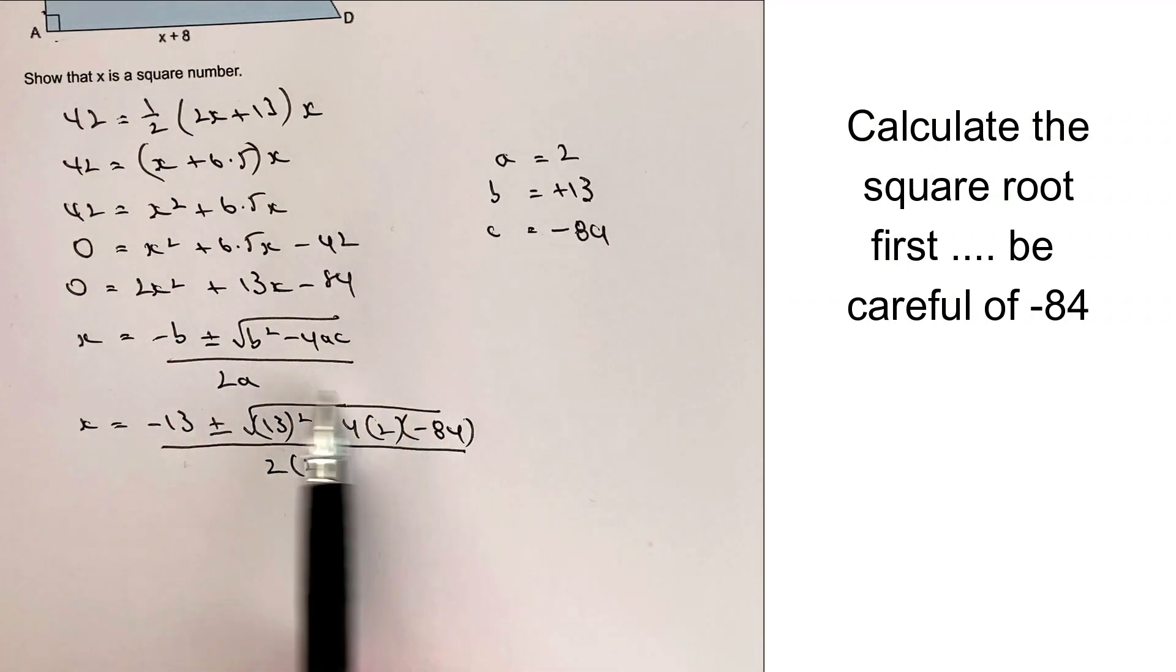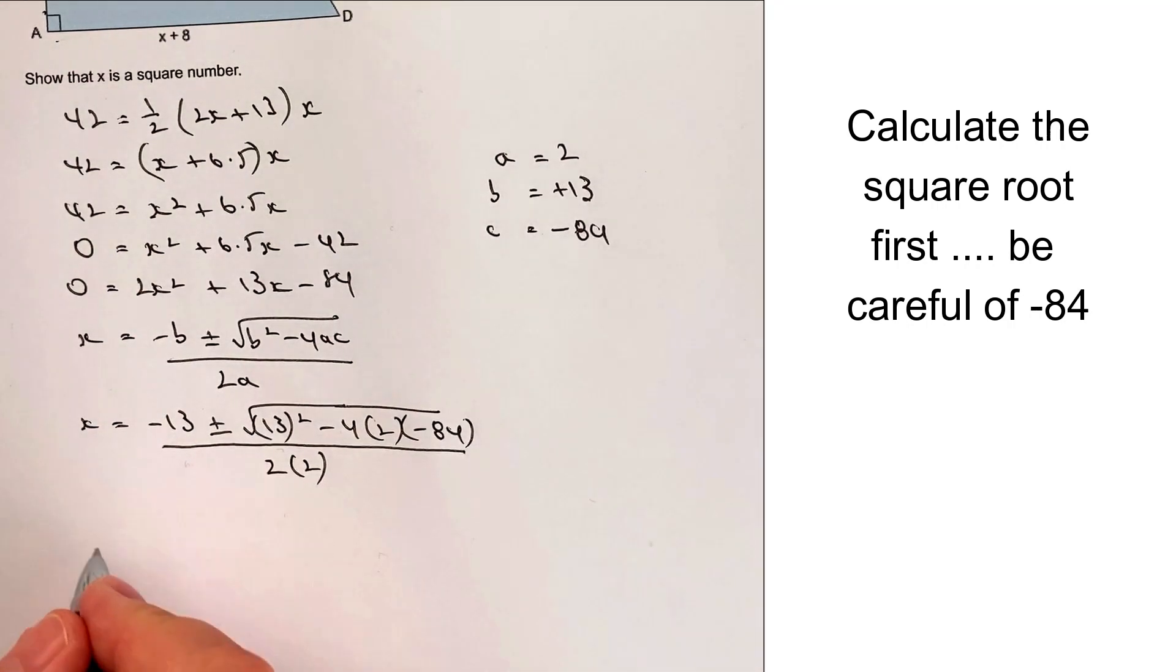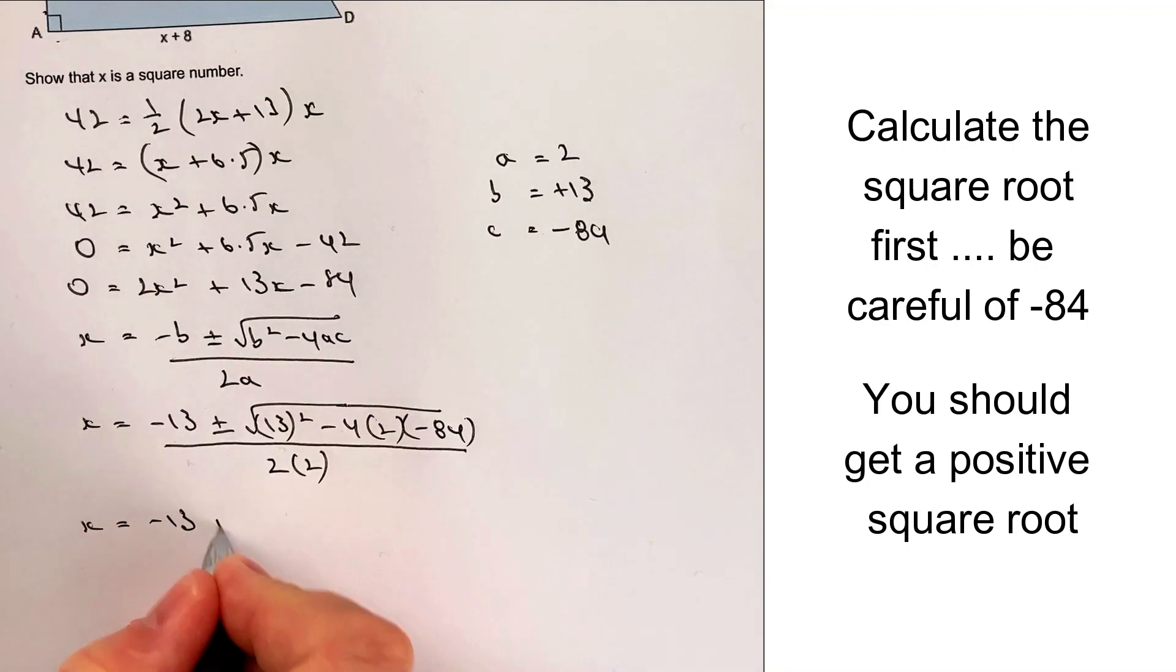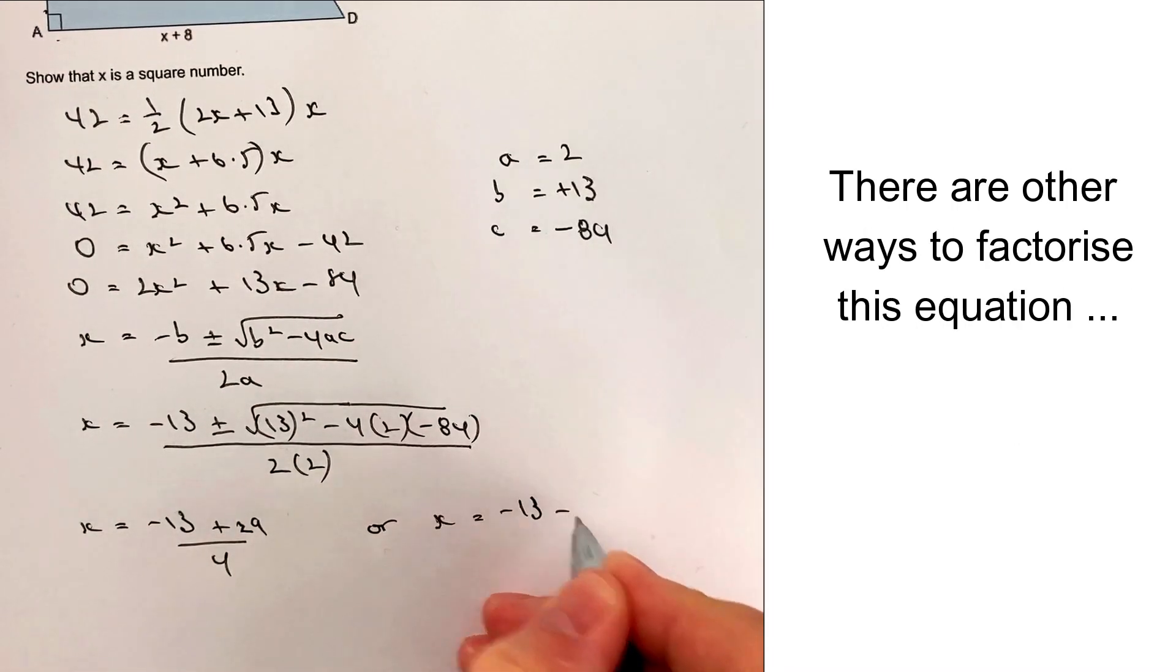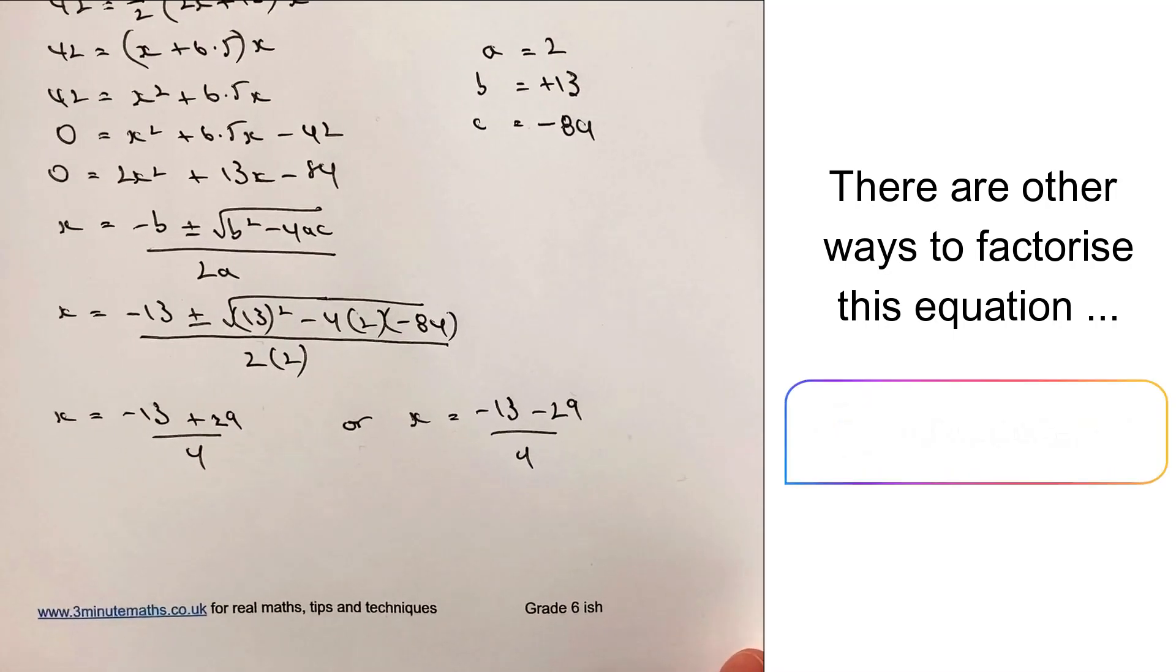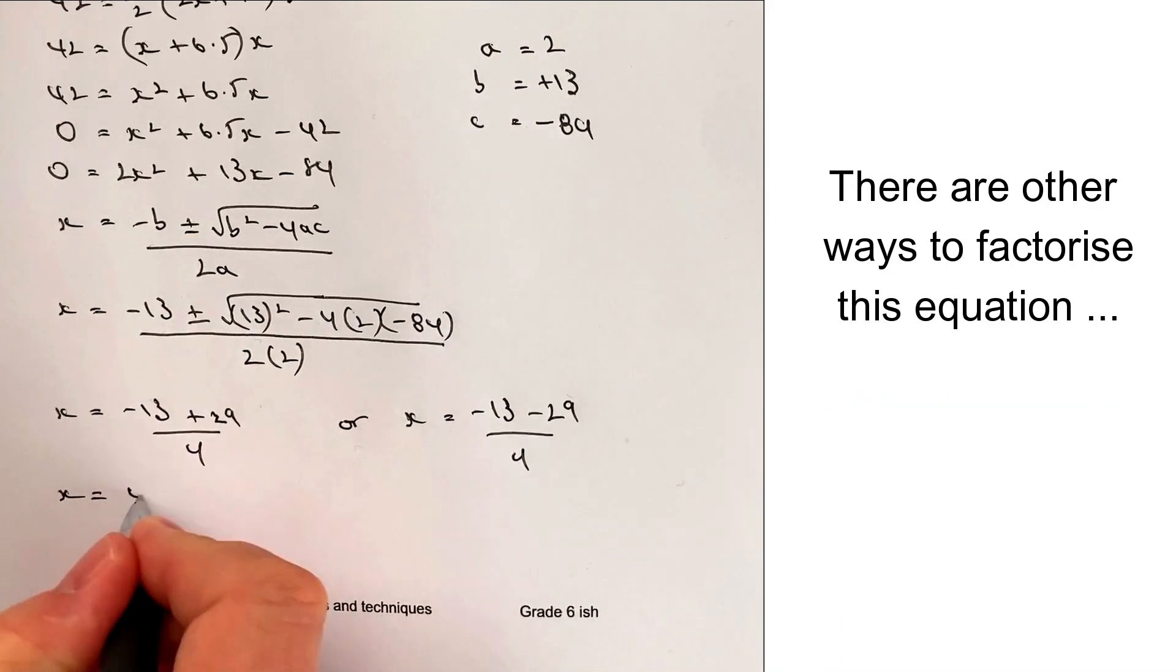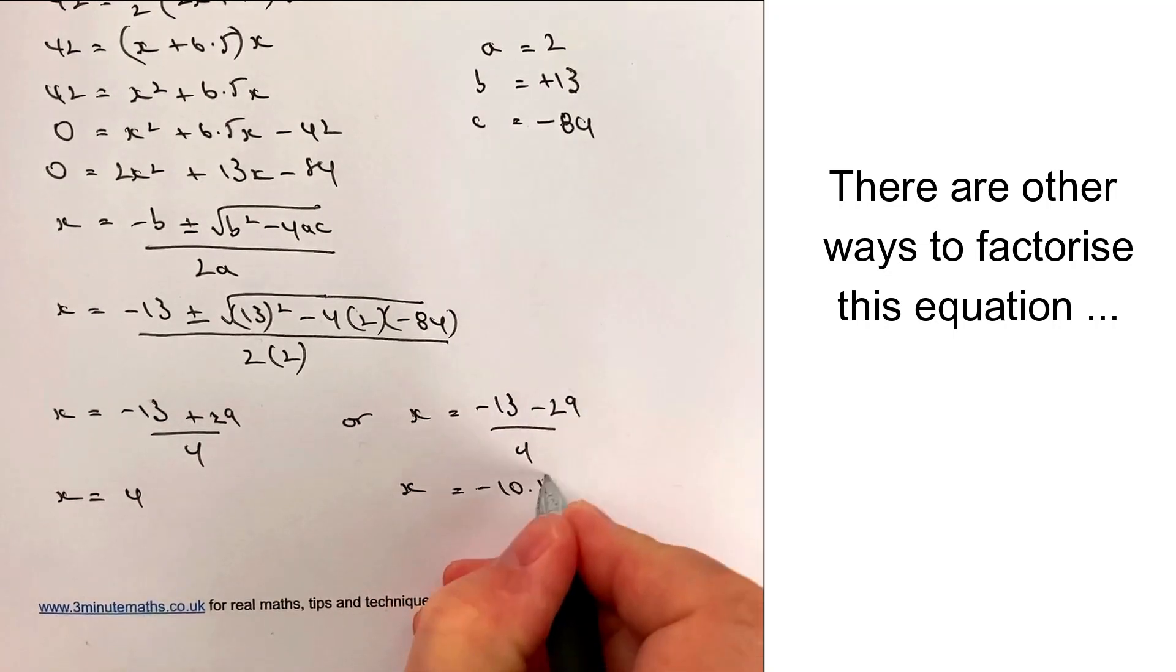Now, I know people will use scientific calculators for doing all this, but what you will end up with, I hope, is that x equals minus 13 plus 29 all divided by 4, or x equals minus 13 minus 29 all divided by 4. Now, that's going to give us two values of x, one where x equals 4 and one where x equals minus 10.5.